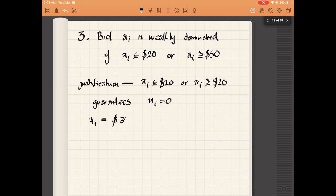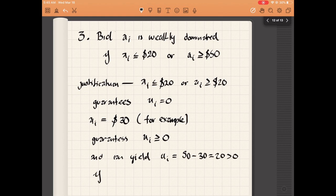Either of those guarantees non-positive utility. In contrast, if you bid 30, your utility is never negative and will be positive when you win. So bidding less than the reserve price or more than your value is weakly dominated.